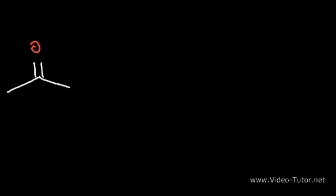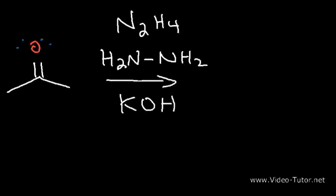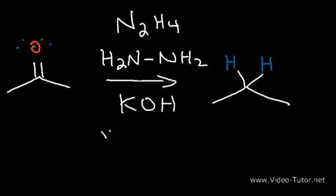Now let's say we have acetone as our ketone. Another way to reduce it into an alkane is using the Wolff-Kishner reaction, which uses hydrazine (NH₂NH₂), also written as N₂H₄, in an alkaline solution of potassium hydroxide, a strong base. The final product will be an alkane — we replace the oxygen with two hydrogen atoms. This reaction occurs under basic conditions.